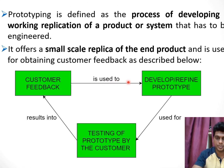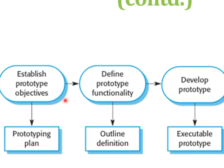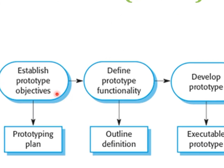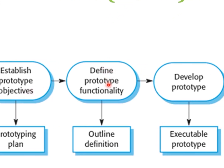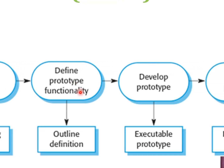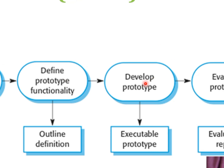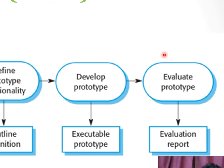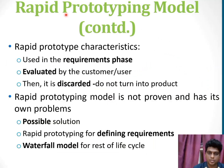Customer feedback is used to develop or refine the prototype, which is then used for testing by the customer, and then handed over to the customer for their valuable feedback. In this model, first we define the objectives required to establish the prototypes. Based on the objectives, we define the prototype functions. After defining the functions, it helps to develop the prototype model, and after developing it, we can evaluate its performance.